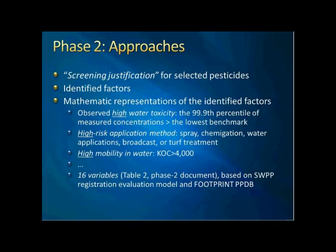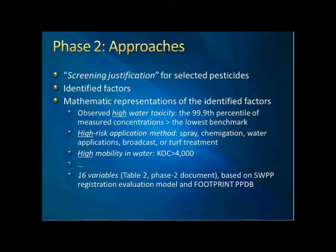The next step is to translate those factors into a mathematical format. For example, for monitoring results, we define high observed water concentration as the 99.9th percentile of measured concentrations being higher than the lowest benchmark. For the application method, we define high-risk application methods, including spray communication, water application, broadcast, or tarp treatment. These are not only descriptions but also exactly the same definitions used in the PUR database, so we can retrieve information directly from that database.